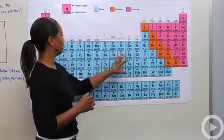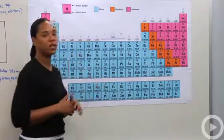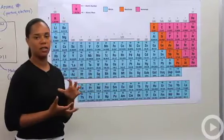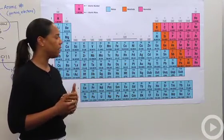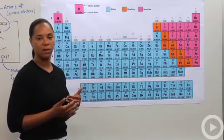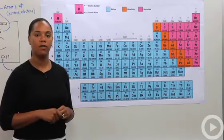And then these guys in the middle, collectively from about here to here, are your transition metals. Those guys, as we'll discuss later on, have really strange properties and interact with different elements in different ways. So that's basically the overall gist of the periodic table.